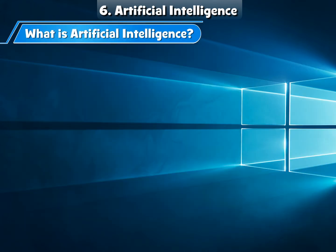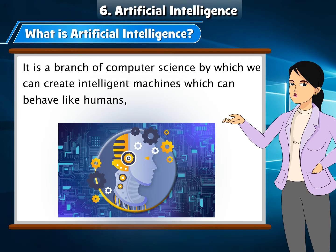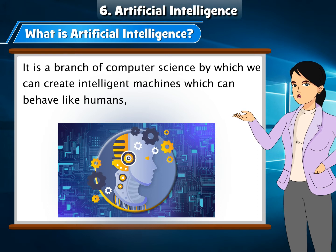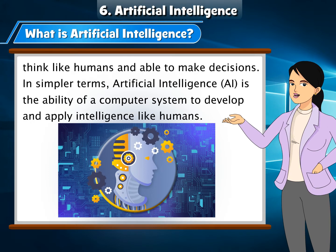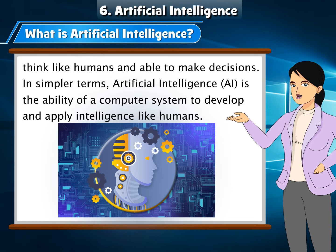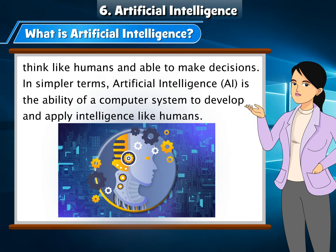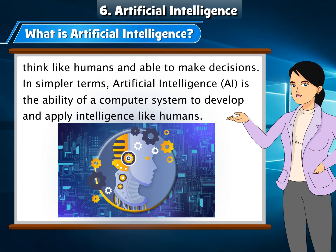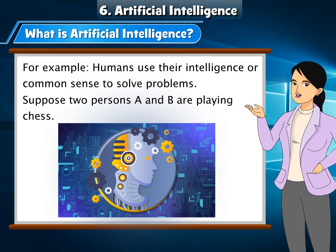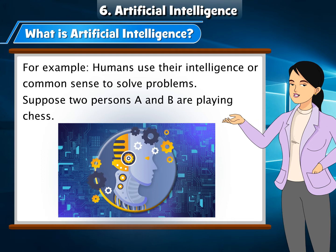What is Artificial Intelligence? It is a branch of computer science by which we can create intelligent machines which can behave like humans, think like humans, and are able to make decisions. In simpler terms, Artificial Intelligence, or AI, is the ability of a computer system to develop and apply intelligence like humans. For example, humans use their intelligence or common sense to solve problems.